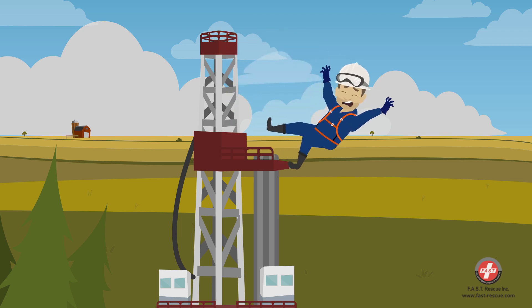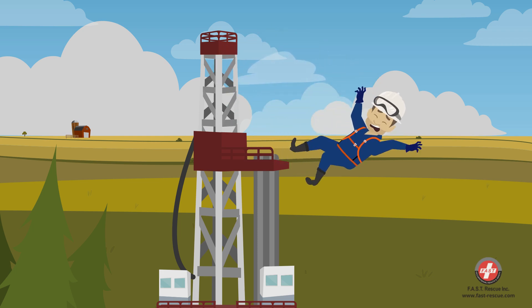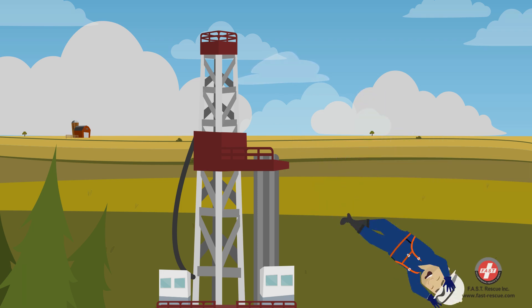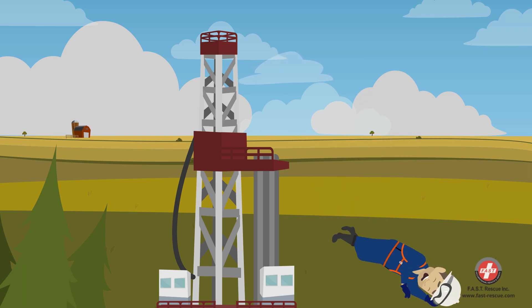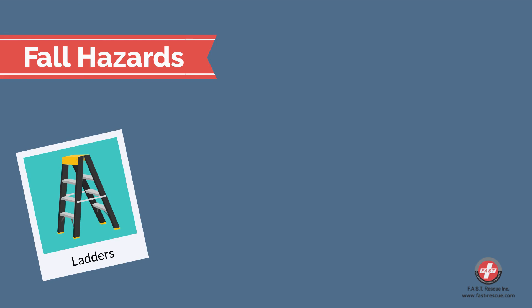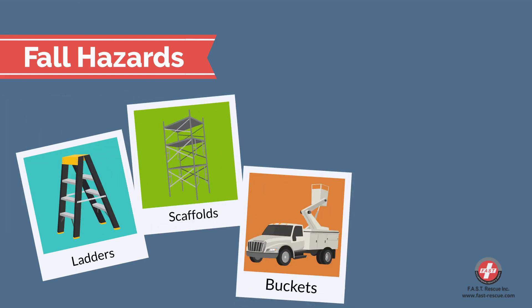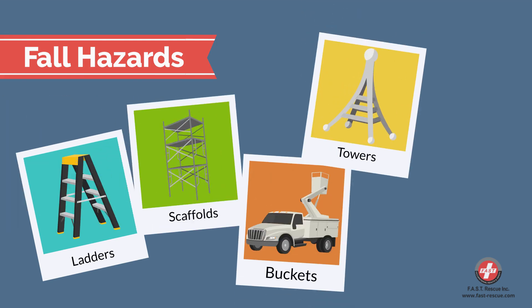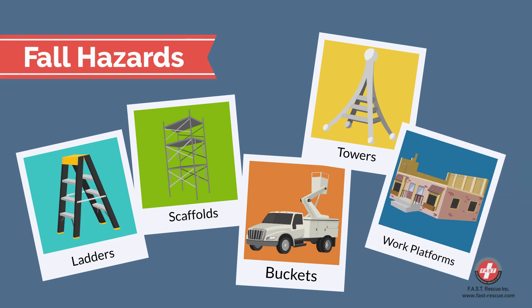It takes another one-third of a second for the body to react. A body can fall up to 2 meters (6.5 feet) in two-thirds of a second, meaning that by the time you react, you would have already fallen 2 meters. Examples of fall hazards include ladders, scaffolds, buckets, towers, work platforms, or any other off-ground situation.